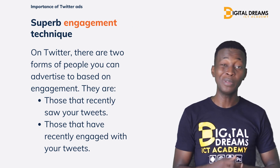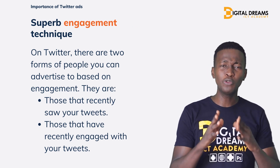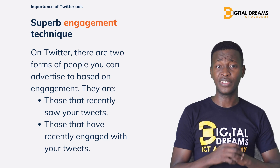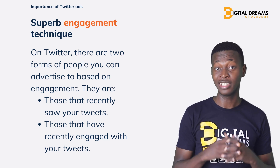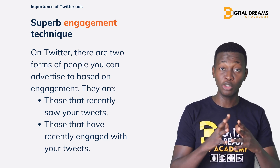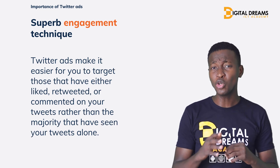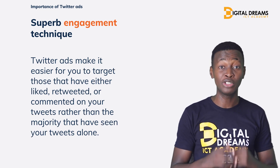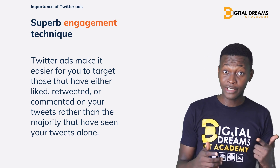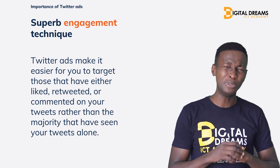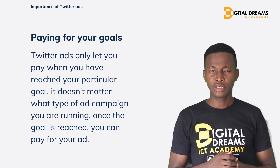Next up is the super engagement technique. On Twitter, there are only two forms of people you can advertise to: first, those that recently saw your tweets; second, those that recently engaged with your tweets. Twitter advertising is so convenient that you can target only those that have retweeted, liked, or commented on your tweet, instead of the majority that have just seen it.